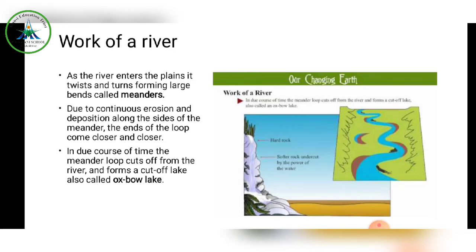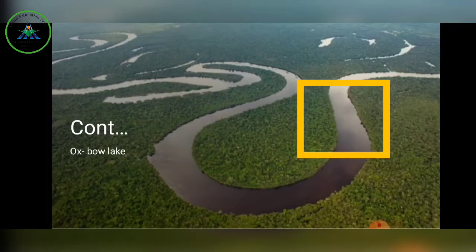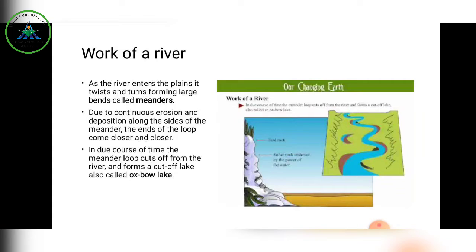Looking at the picture, the river has already entered the plain and takes huge curves. The yellow portion shown is the neck, which is about to be filled — sediments are being deposited from both ends. Over time, the meander loop cuts off from the river because sediments are brought from both ends.